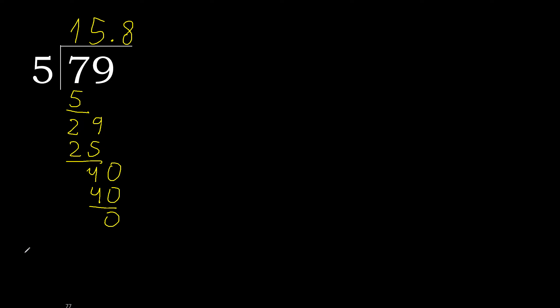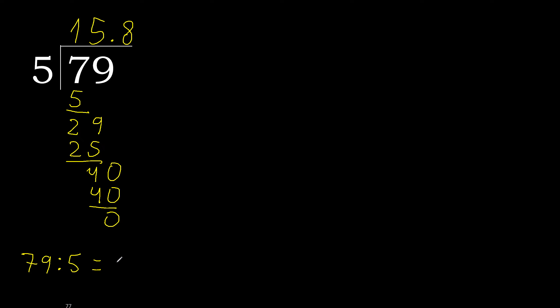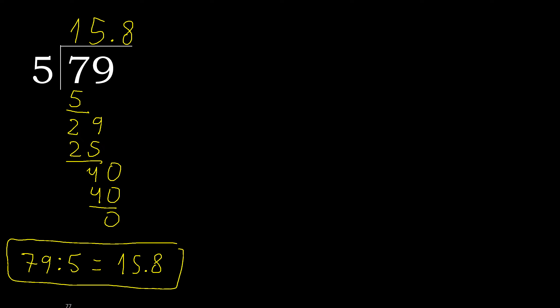Therefore, finish it. Therefore, 79 divided by 5 is 15.8.